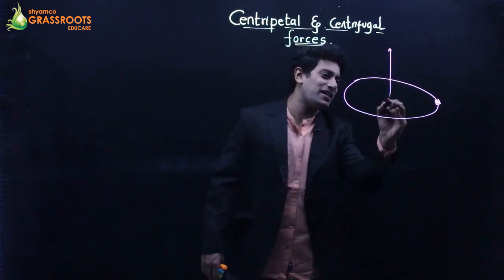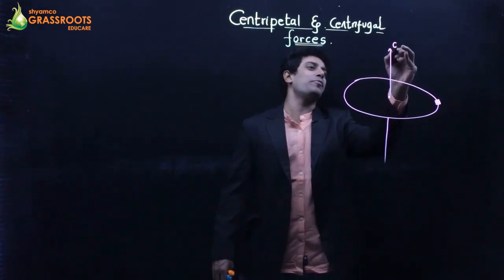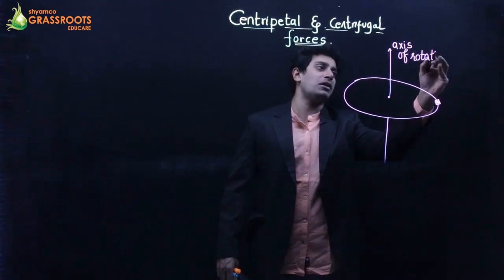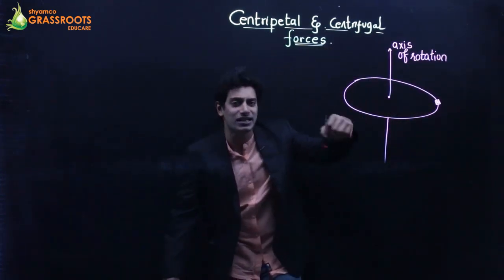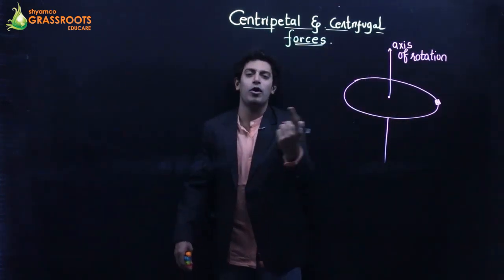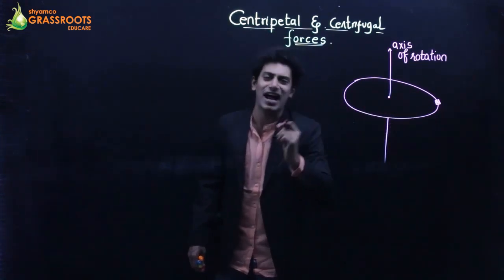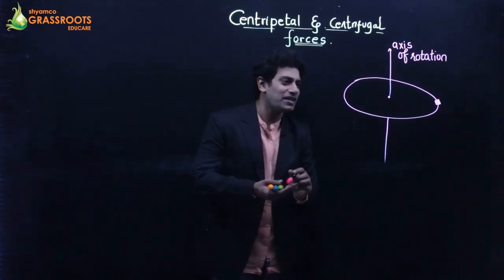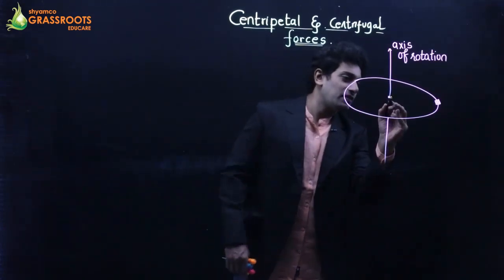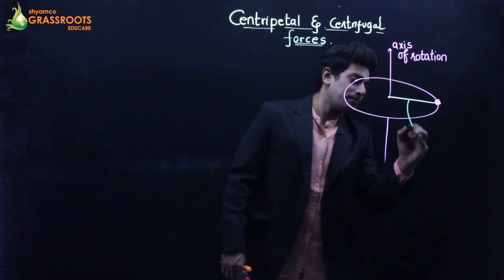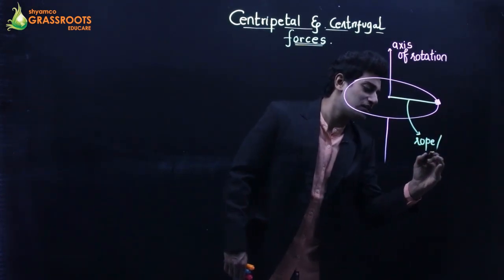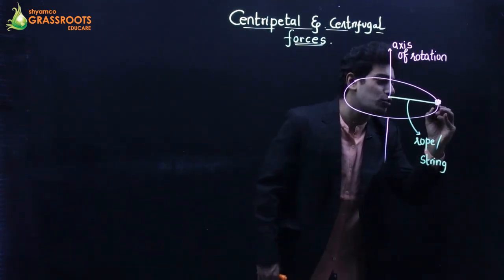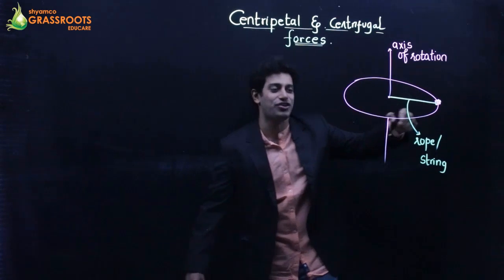And there will be a center. This is going to be an axis of rotation. Axis of rotation means around it — the rope and the rubber, which is tied to a string, keep on moving. This is the string, and the rubber is attached to the string, moving round and round.